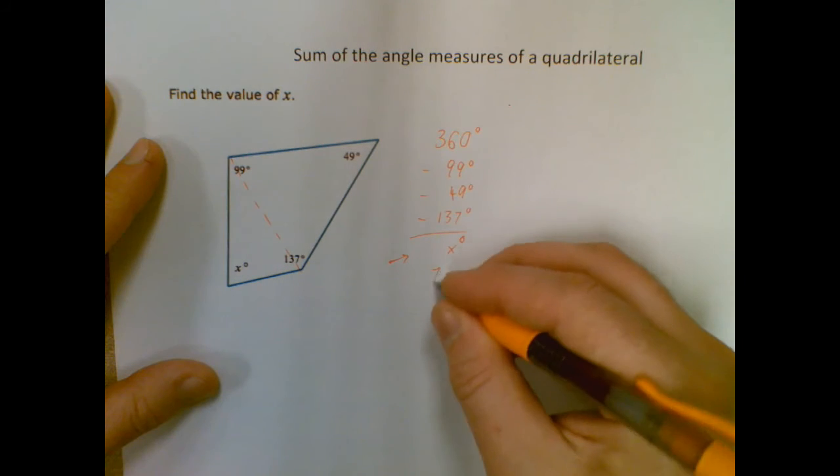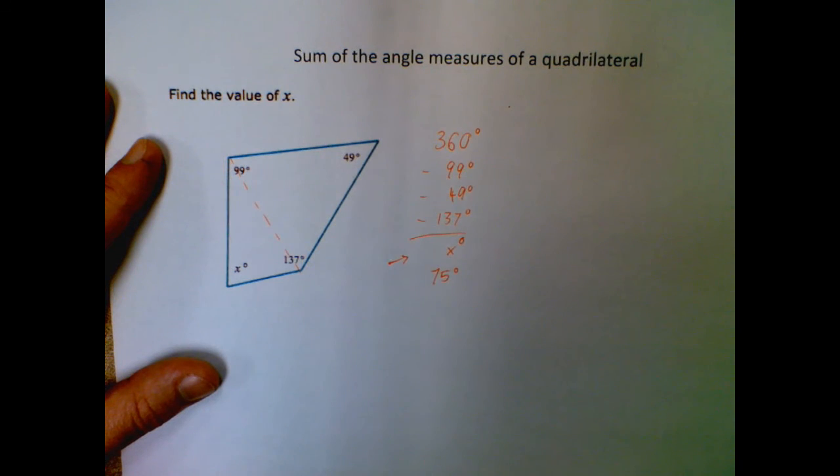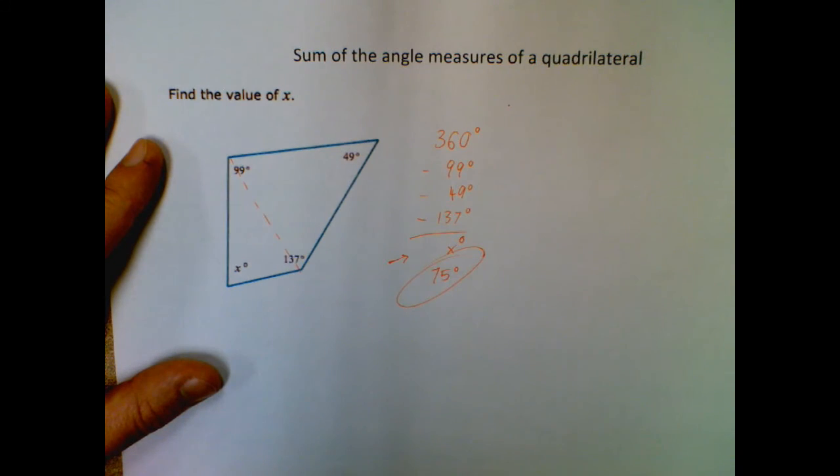Let's double check. So it's good to do that. So 75 plus 137 plus 49 plus 99 does come out to 360. So our answer is 75 degrees.